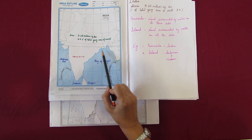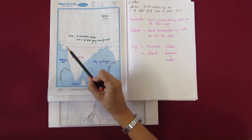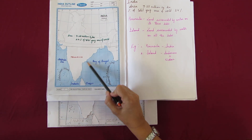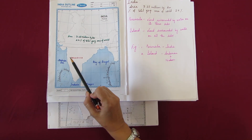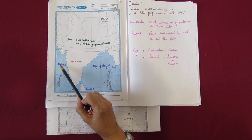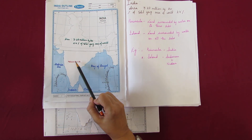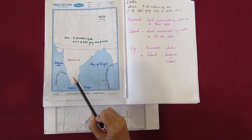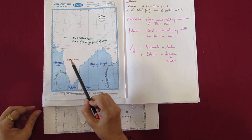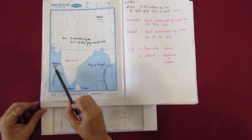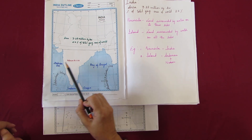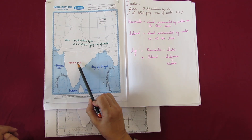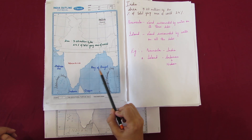At 22 degrees latitude, the southern part tapers down and is surrounded on all three sides by water bodies, making it Peninsular India. Towards the west lies the Arabian Sea, towards the south lies the Indian Ocean, and towards the east lies the Bay of Bengal.